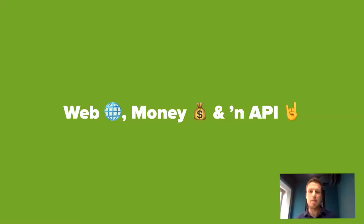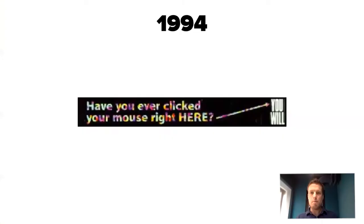My name is Ruvian de Vries. I'm going to talk about web, money, and an API. But before jumping to the API, let's talk about web and money first, and see how we get to the API. When I think about web and money, I start to think about advertisements, of course.